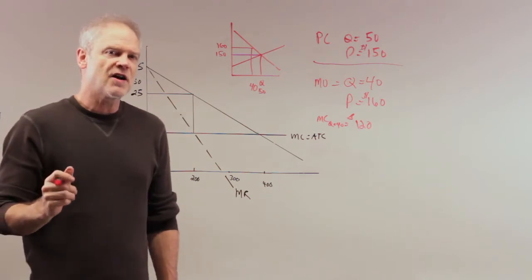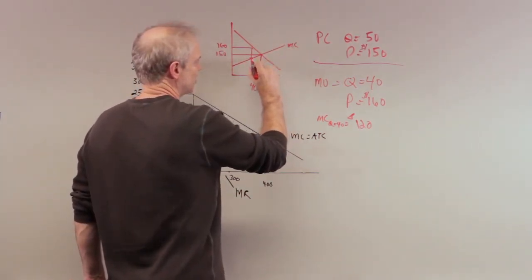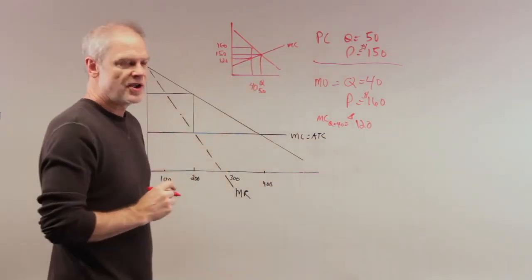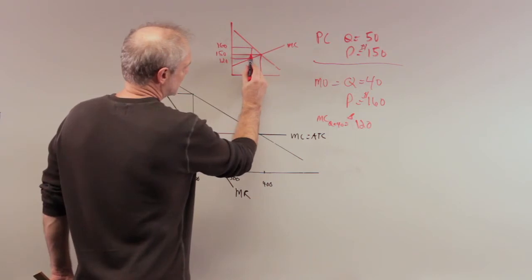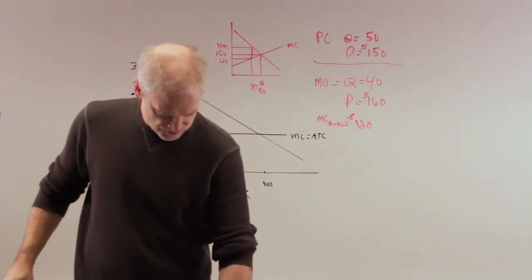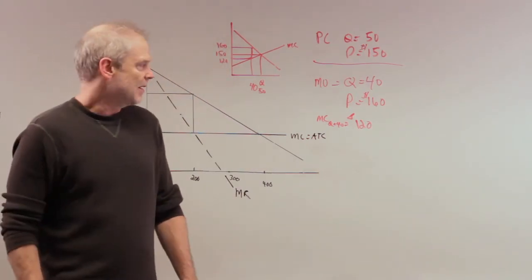And that the marginal cost of the 40th unit, this right here, this MC, the marginal cost of the 40th unit, not drawn to scale, is $120. So now you know this distance right here, you know this distance right here, and the question asks you, what is the value of the deadweight loss of the monopolist?